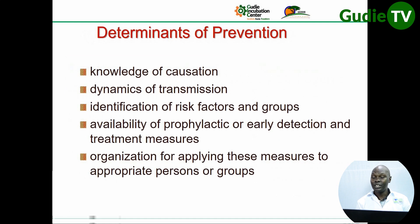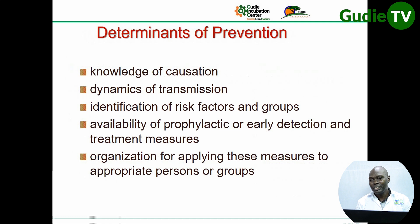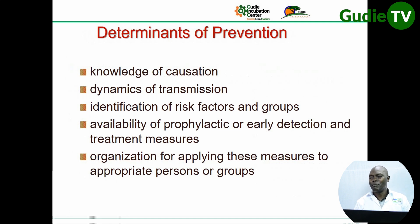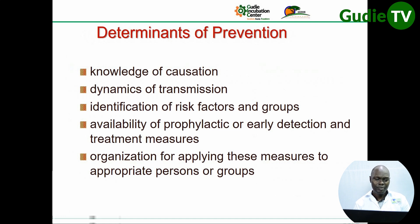The determinants of prevention include: knowledge of the causes — you must know what is causing the disease in order to manage it. You also need to understand the dynamics of transmission. For example, with malaria on a farm, you need to know how malaria is transmitted between farmers via mosquito bites before you can prevent it. Additionally, identification of risk factors and groups, and availability of prevention, detection, and treatment measures are key.